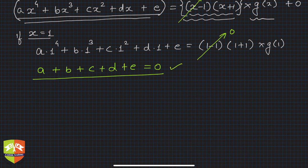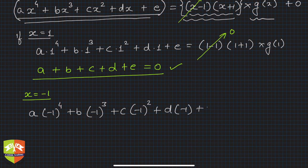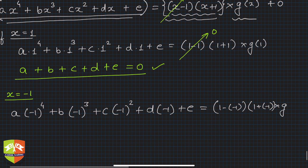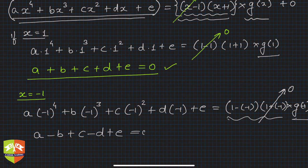Next, put x = -1. The right-hand side is again 0, because (-1 - 1) = -2 and (-1 + 1) = 0, making the product 0 regardless of g(-1). The left-hand side gives: a(-1)⁴ + b(-1)³ + c(-1)² + d(-1) + e = a - b + c - d + e = 0. This is equation 2.